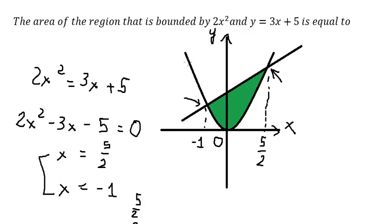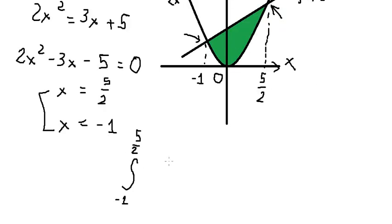So we know that the curve, about 2x square, is below than the line 3x plus 5. So we need to put 3x plus 5 go first, later that we minus 2x square.